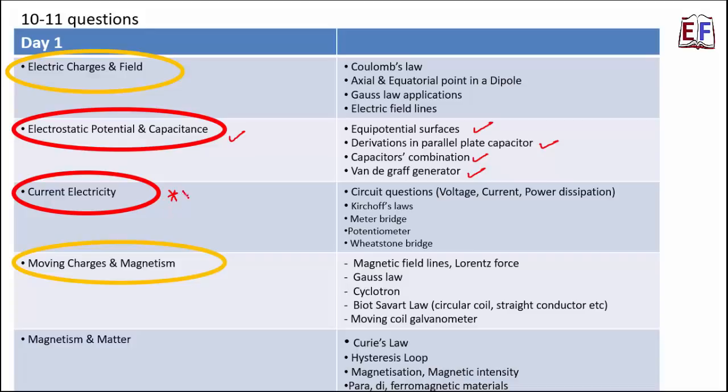Then current electricity. Now as I said, this is a very important lesson. And to be honest, I would not say that you should just revise one or two topics from this lesson. You should revise this lesson thoroughly because all the topics of this lesson are important. So from this lesson, you get circuit related questions. You are given a circuit. You are asked to calculate voltage or current or equivalent resistances. Things like that. They are generally based on one of these concepts. Kirchhoff's laws, meter bridge, potentiometer, wheatstone bridge.